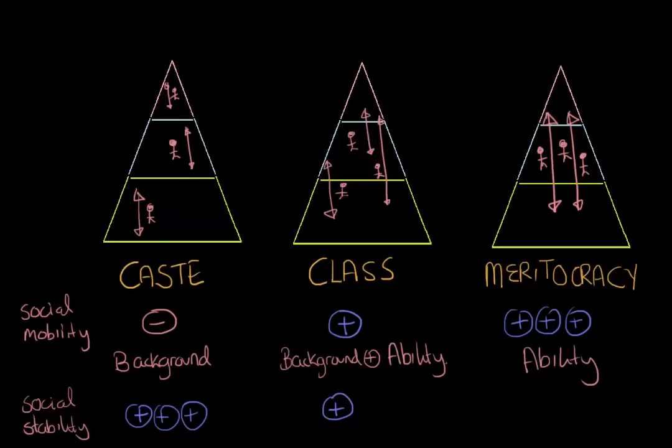As you can imagine, there may not be as much social stability, because their relative kind of background organization of families and social groups may be much less stable than the caste system and the class system, and the purest form of meritocracy. So as we can see here, in a meritocracy, we have the greatest degree of upward and downward social mobility compared to the caste and class system.